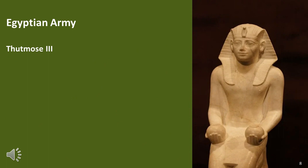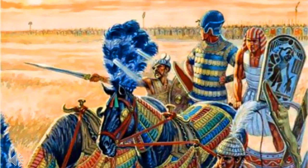Thutmose III led an army which, during the battle, divided into three parts. Two parts seemed similar in size, with the third being a smaller, lighter or faster force. It's possible the army was organised into two main divisions, each of which could have consisted of up to 10,000 men. Most scholars put the Egyptian army between 10,000 and 20,000 men in total. I'm assuming the upper total may be the most likely, and most of my estimates from this point on assume that accordingly.